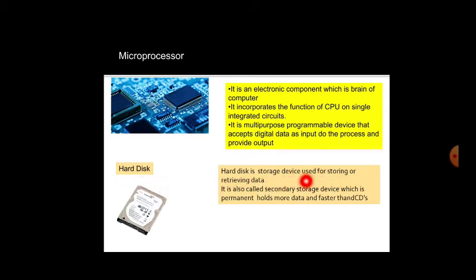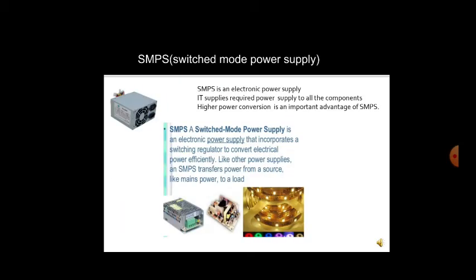A hard disk is a storage device used for storing and retrieving data. It is also called a secondary storage device, which is permanent, holds more data, and is faster than CDs. It is located inside the CPU. Once data is saved on the hard disk, it remains there permanently — even if power goes off, the data will not be erased.